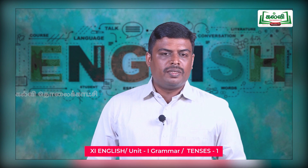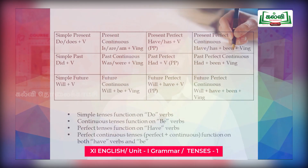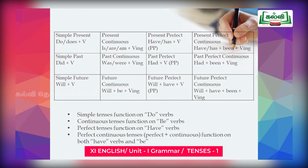Now, simple tenses: simple present, simple past, simple future. For simple tenses, we use the 'do' helping verb. For simple present tense, we use 'do' or 'does' plus verb — 'do' for plural and 'does' for singular. For simple past tense, we use 'did' plus verb. For simple future, we use 'will' plus verb. This is the pattern for simple tenses.